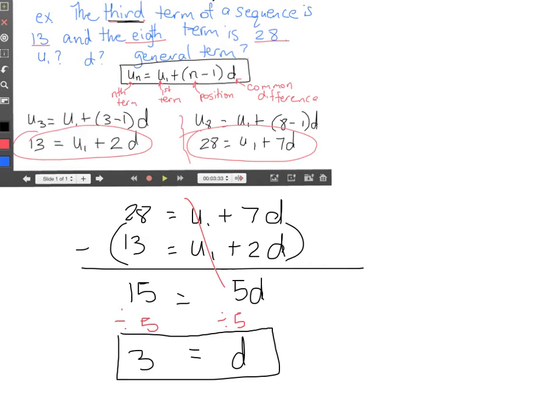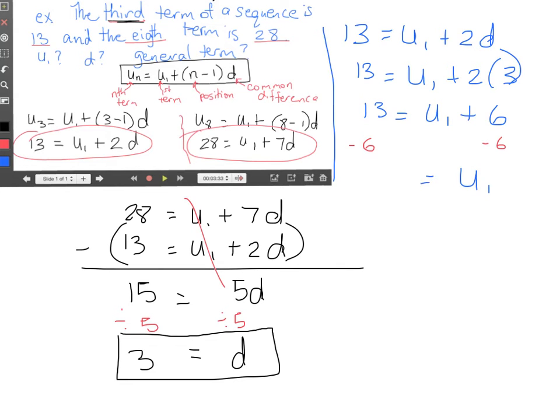We found our d value. So now we need to find our u1 value, our first term. And in order to do so we can choose either equation, whichever one our heart fancies. This one or this one it doesn't matter. And plug into that equation. So I choose this equation just because I prefer to work with smaller numbers. And I'm going to rewrite that equation over here. We have here 13 equals u1 plus 2d. So 13 is equal to we don't know u1 yet but we do know d is 3. We just got that over here. So since d is 3 we can plug that in there. And so we have 13 is equal to u1 plus 6 taking 6 from both sides. We can isolate our u1 and we get that u1 is equal to 7.